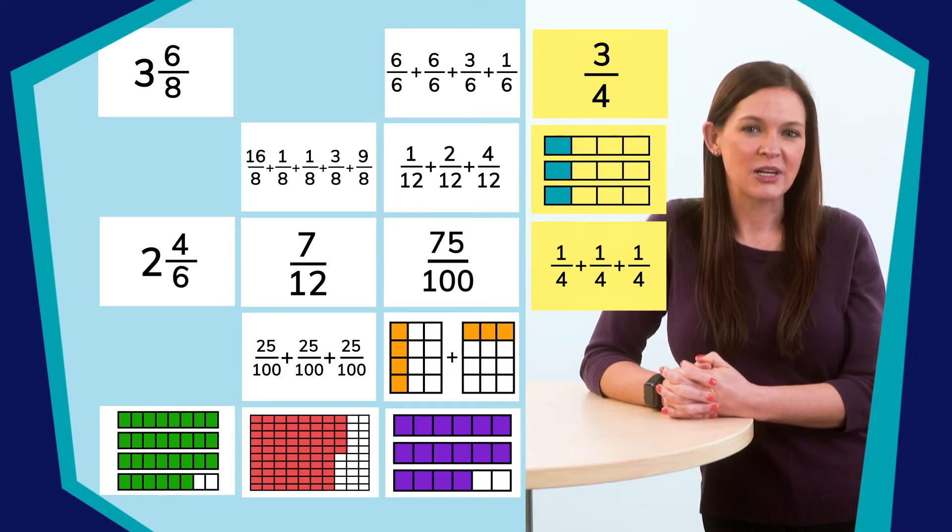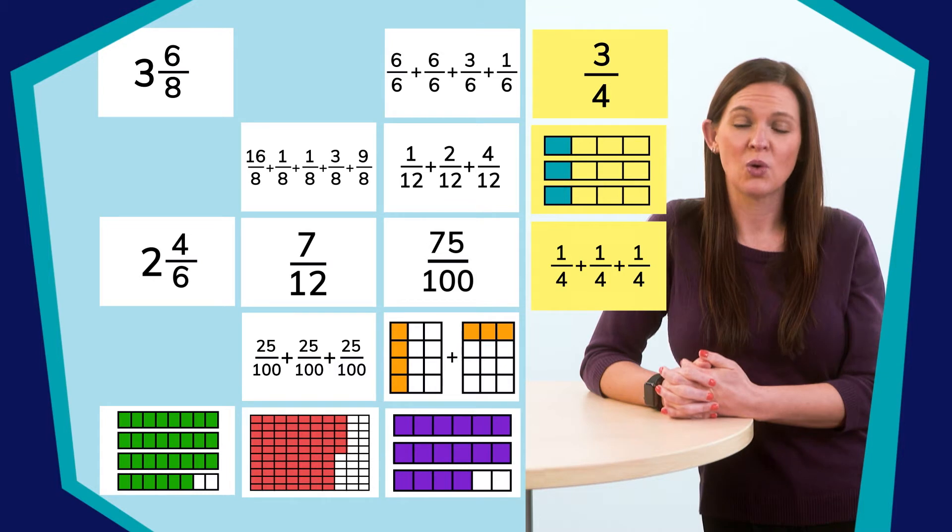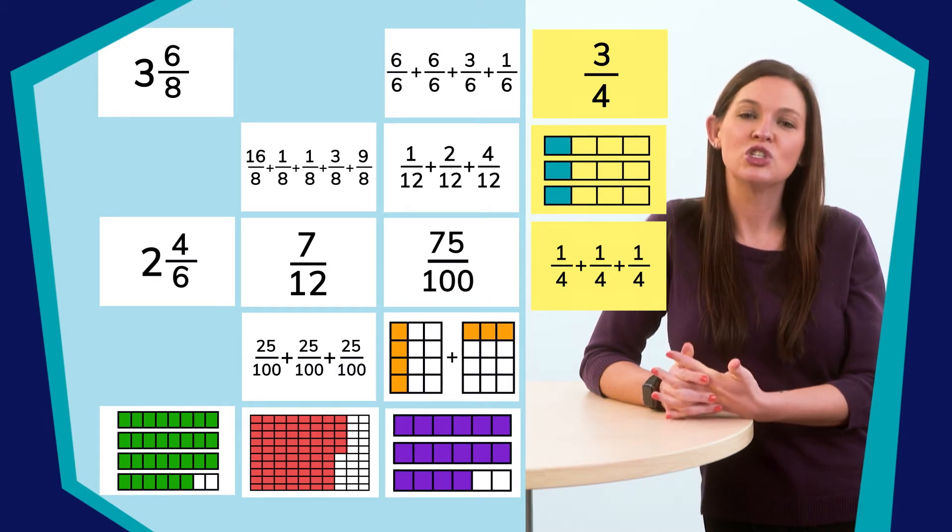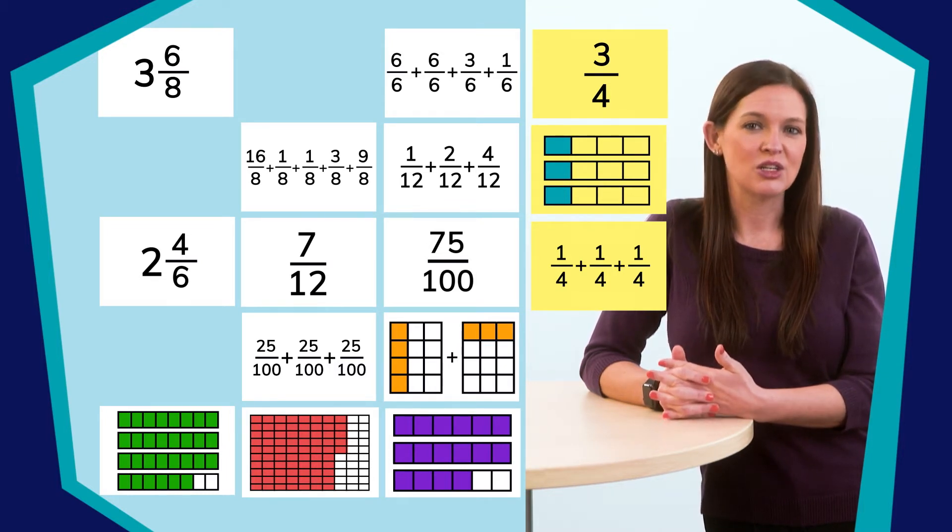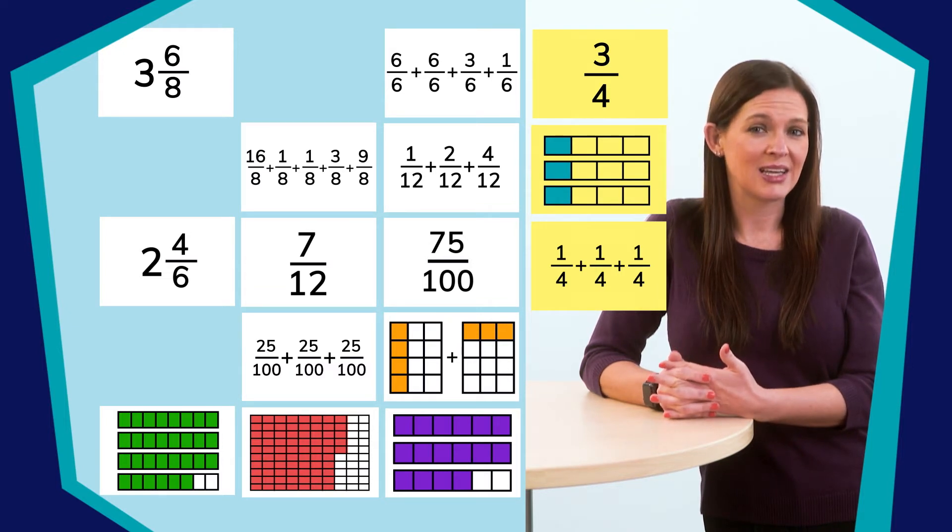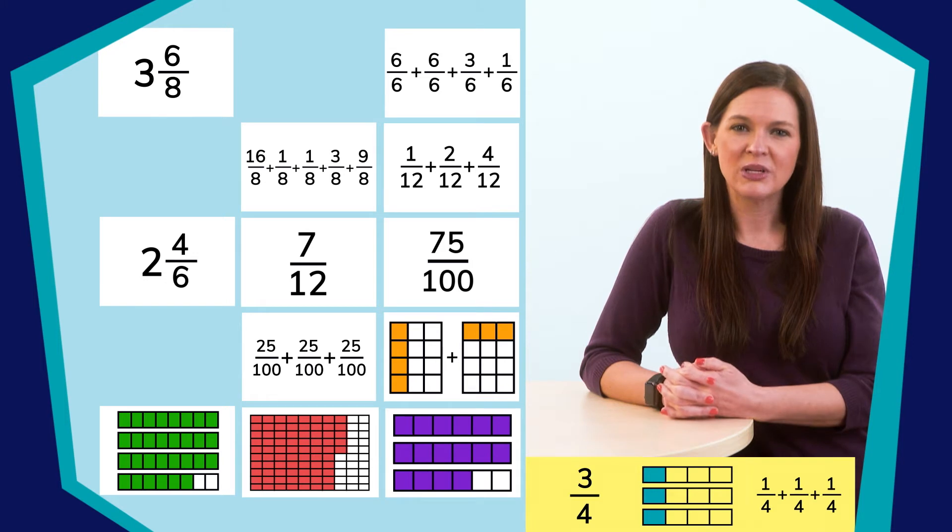It looks like this part of the puzzle had 3 fourths decomposed, or broken down, into its unit fraction parts. See, each of these is a unit fraction, and when added together, they equal 3 fourths. I wonder if the other ones will be done the same way.